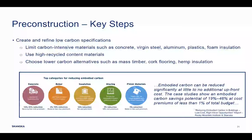When asked about cost, the main question we always get as general contractor is: what's the cost premium? I want to highlight a study we did with Rocky Mountain Institute last year. We looked at different case scenarios and found that embodied carbon can be reduced significantly at little to no additional upfront cost. Our case studies show that embodied carbon savings of 19 to 46% can be achieved with less than 1% cost premium. As a rule of thumb, we typically say up to 30% embodied carbon reduction in any project can probably be achieved through no-cost or low-cost solutions.